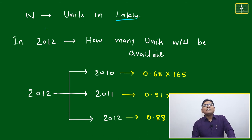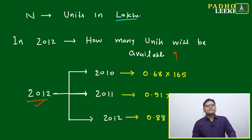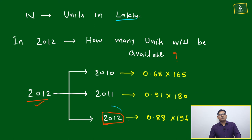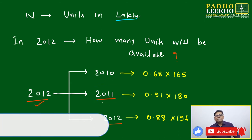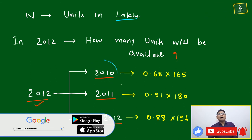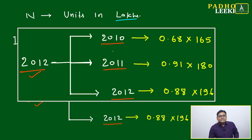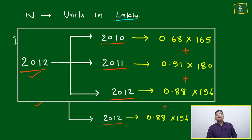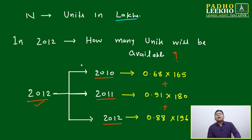For example: in 2012, how many units will be available? To measure this, we need three components. First, 2012's own manufactured output. Second, 2011's output — still running because it won't become obsolete in 2012. Third, 2010's output with 20% now obsolete, so only 80% remains. Add these three to get the total units available in 2012.